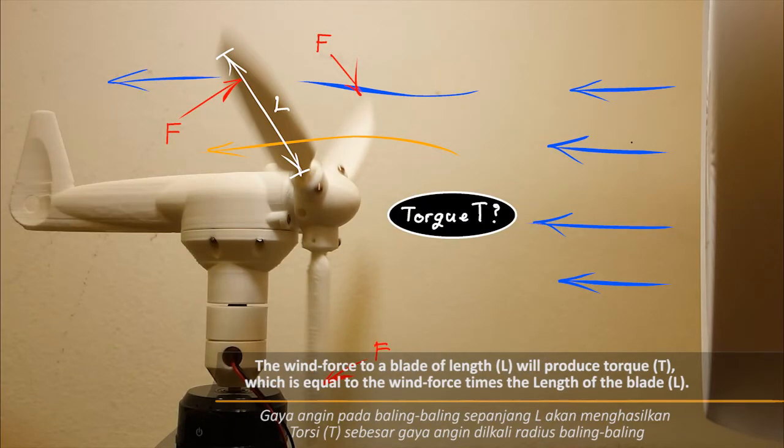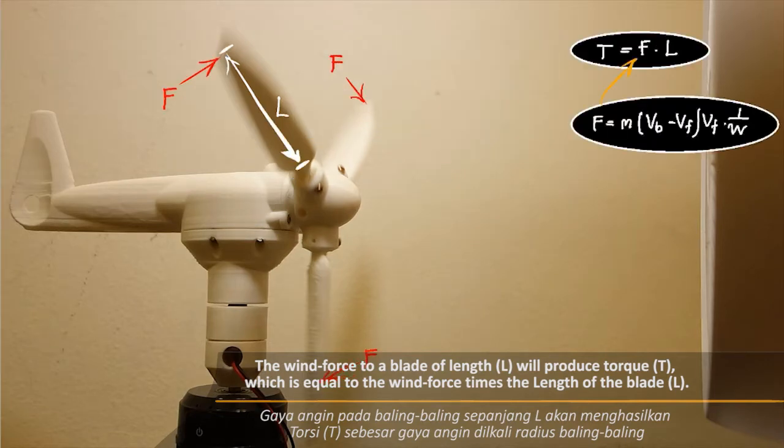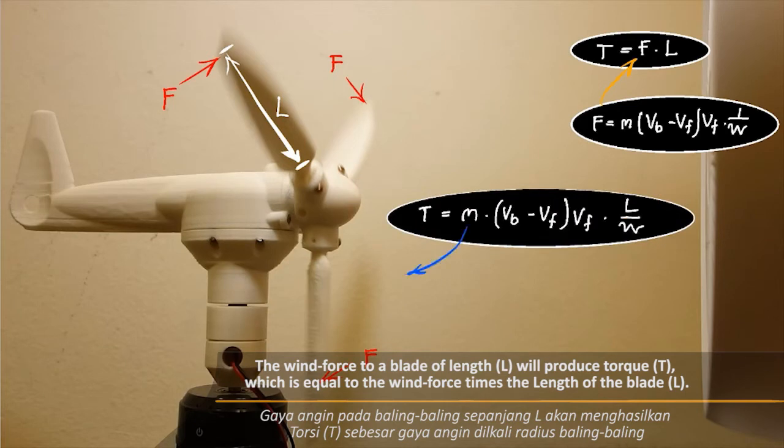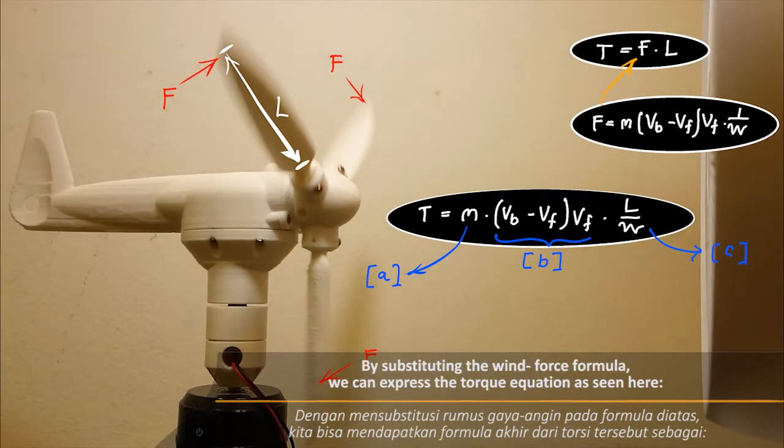The wind force to a blade of length L will produce torque T, which is equal to the wind force times the length of the blade L. By substituting the wind force formula, we can express the torque equation as seen here.